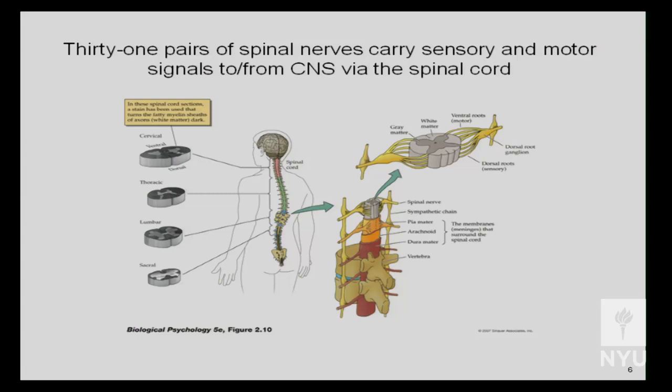Cranial means head. There are 31 pairs of spinal nerves, and these are the nerves carrying sensory and motor information through the entire body, starting from the shoulders all the way down to your toes, coming off the main body of the spinal cord.